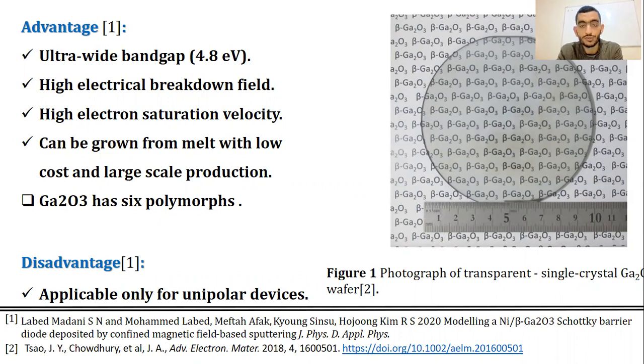However, gallium oxide has serious drawback in developing p-type, thus hindering its application in bipolar devices. Currently, gallium oxide is therefore mainly used in unipolar devices such as MOSFET, thin-film transistor, and Schottky barrier diode.